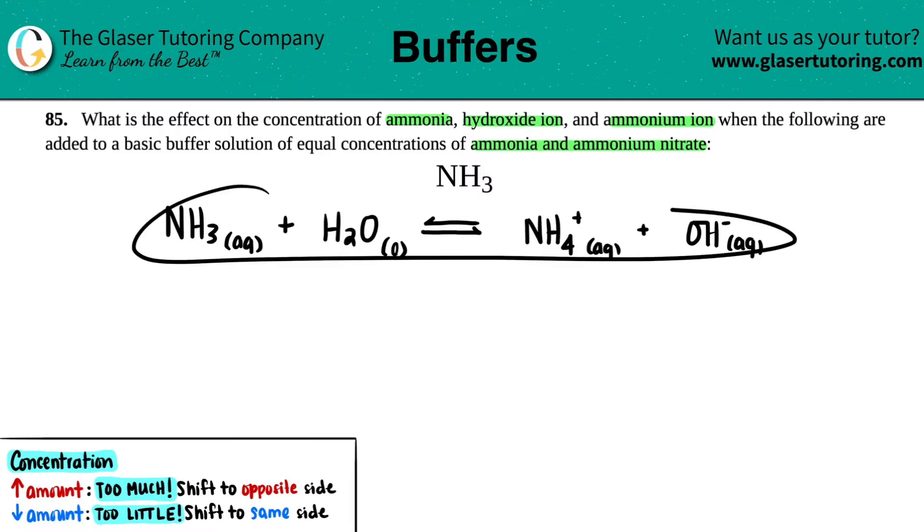If you want a recap on why we're choosing this equation, go back to 85a in the playlist. For this question, we need to figure out what's happening to the ammonia concentration (NH3), the hydroxide ion concentration, and the ammonium (NH4+), which is the conjugate acid of ammonia.